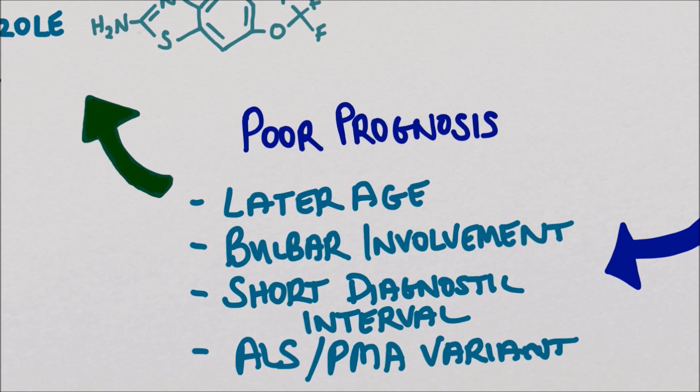Life expectancy from symptom onset is around three to four years on average, but there's great variation from months to decades. Famously, physicist Professor Stephen Hawking has lived with MND for over 40 years.